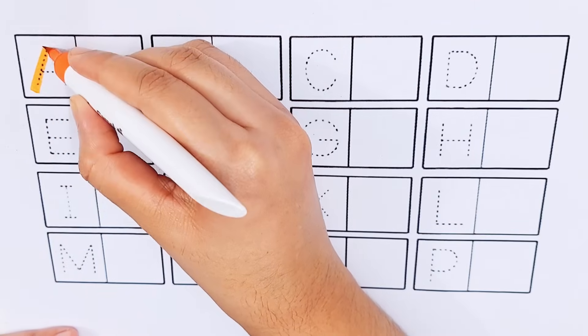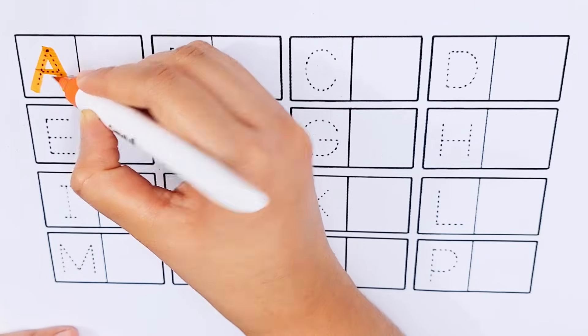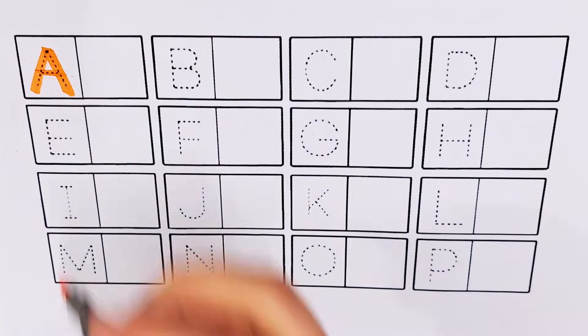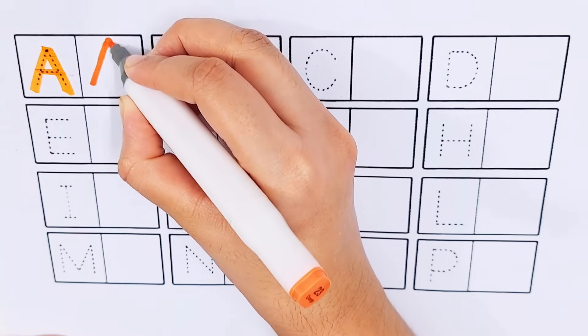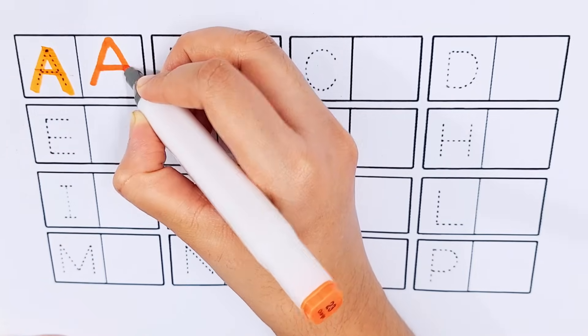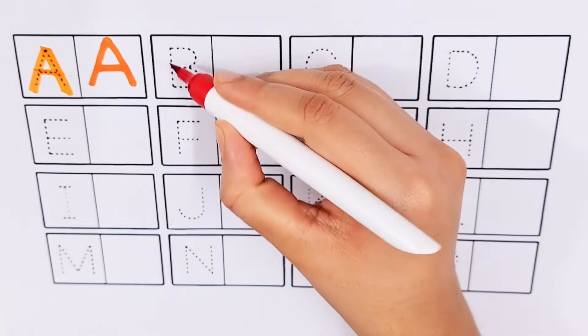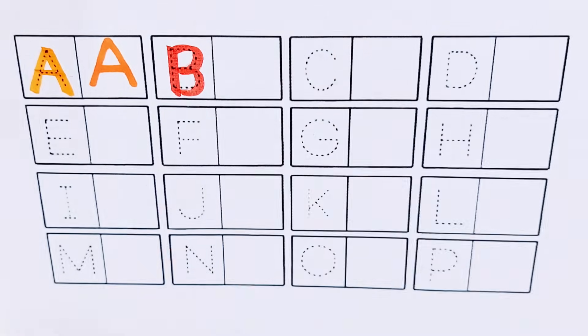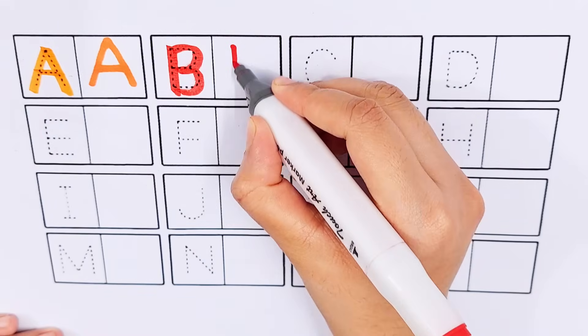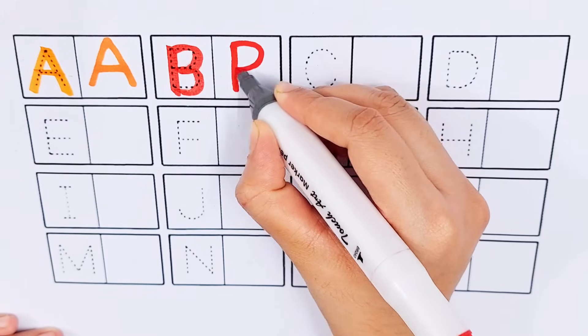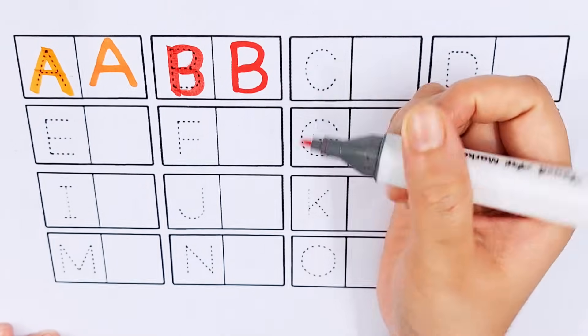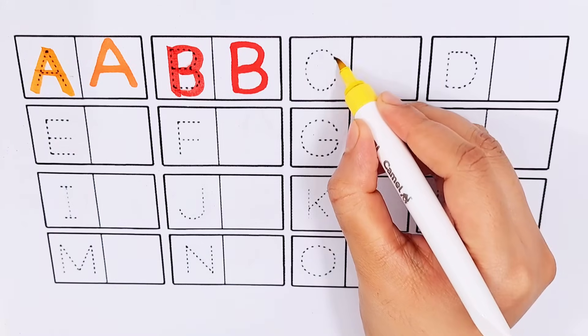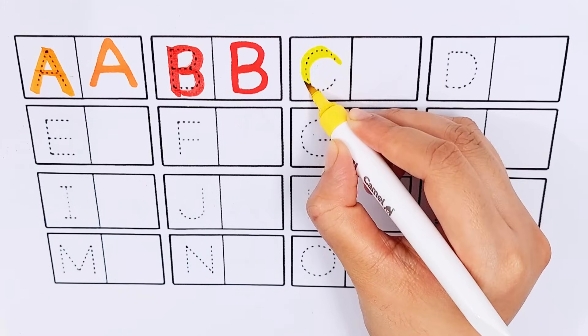A A for aeroplane, A A for avocado. B B for bus, B B for box. C C for cucumber, C C for candy.